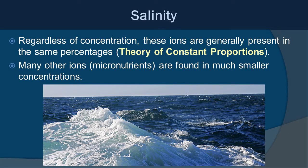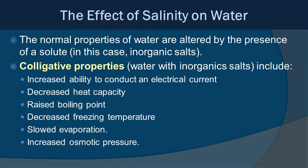Regardless of the concentration, these ions are generally present in the same percentages — that's the theory of constant proportions. Chloride and sodium have the larger share, but magnesium and calcium are also important. Many of these micronutrients are found in much smaller concentrations but are very important to marine life and are often limiting factors in the marine environment. The normal properties of water are altered by the presence of a solute — in this case inorganic salts. We call these colligative properties.